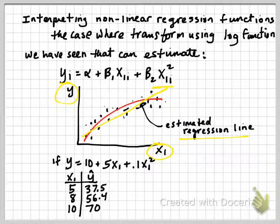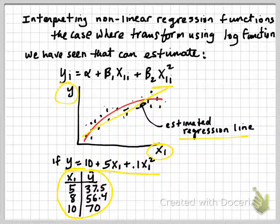Also worth remembering, when we estimate a line, for example, y equals 10 plus 5x1 plus 0.1x1 squared, we can always plot the data and calculate what the expected value is of y. So for x equals 5, we would plug the 5 in here and then we would plug 25 in here.